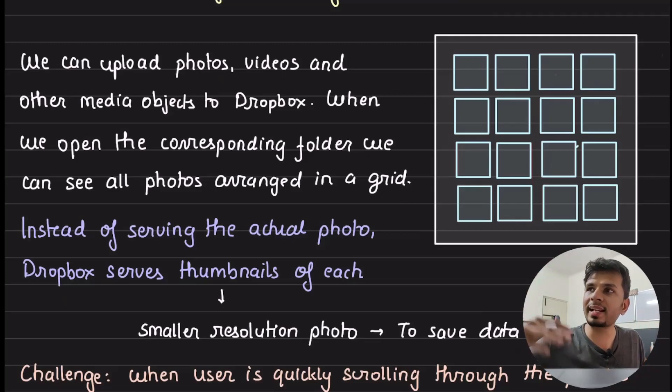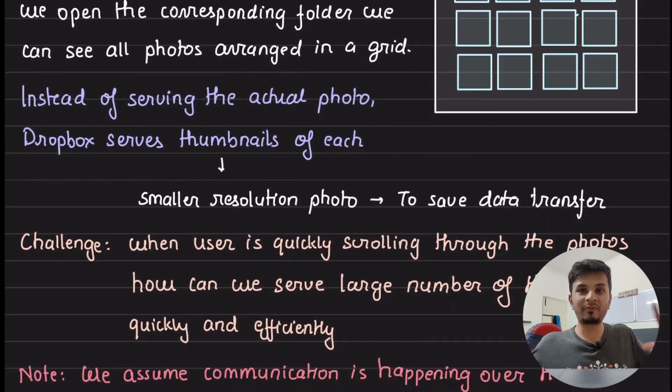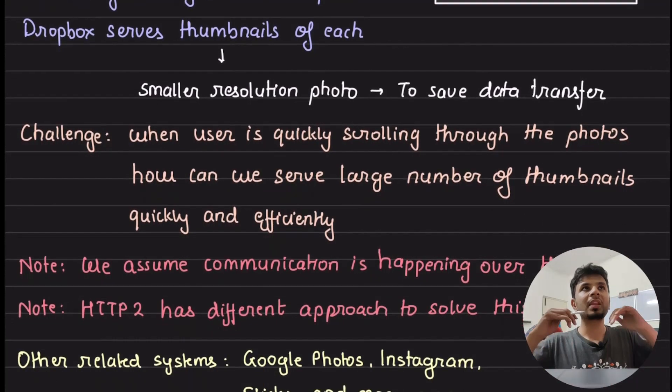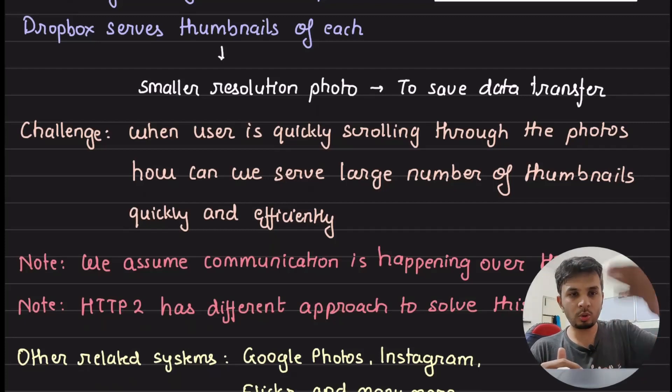You cannot just send your entire photo there because it would be too slow. Your photo might be 2MB, 3MB, 5MB big, but your thumbnail can be 1KB or 2KB big. So given that you would first want to show a large number of thumbnails and then when user taps on it, you show them high quality picture. This is what is the very interesting challenge that comes in.